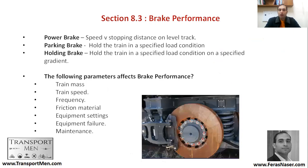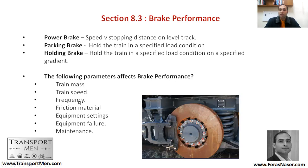Now we'll be talking about how we apply the brake. There is the power brake — speed versus stopping distance on level track — which depends on your speed and how far you are from, for example, someone crossing the rail. There is a parking brake, which holds the train in a specified load condition, and a holding brake, which holds the train in a specified load condition on a specified gradient. The following affects brake performance: train mass, train speed, frequency of brake application, friction material of the brake itself, equipment settings, equipment failure, and maintenance of the braking system.